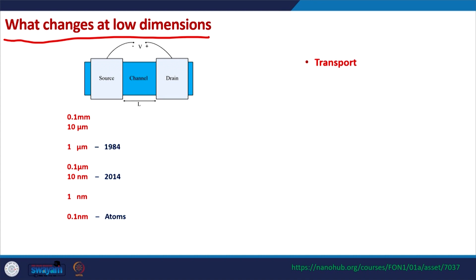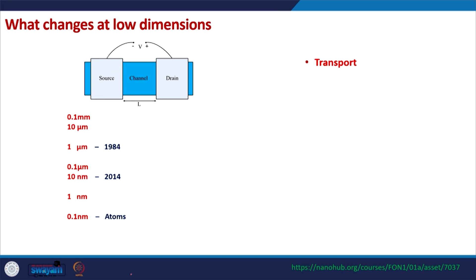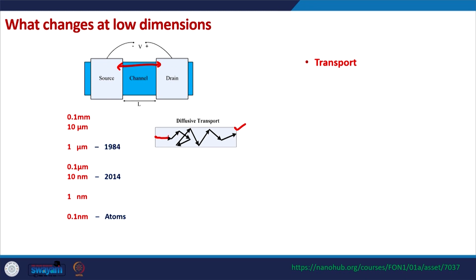We first look at electron transport in the device. Electron transport means how electrons start from the source region. In a transistor there is a battery between source and drain; the drain is at high voltage, source is at low voltage, so current flows from drain to source and electrons flow from source to drain. When electrons travel through a channel of a few tens of nanometers, the electron starts from the source end and collides with many atoms in between.